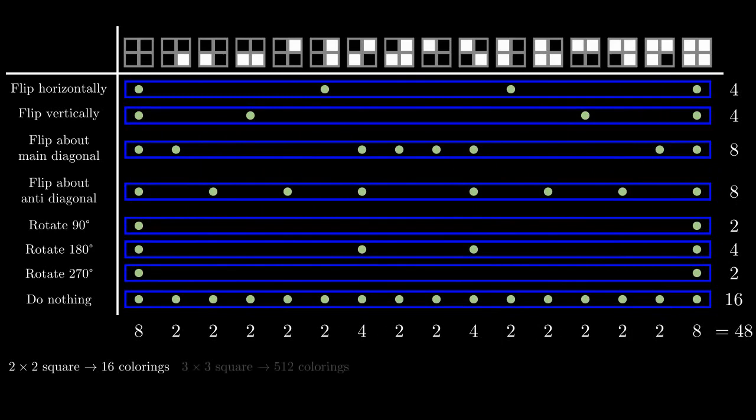This is more efficient, since as the square gets large, the number of colorings grows exponentially, but the number of transformations stays the same.